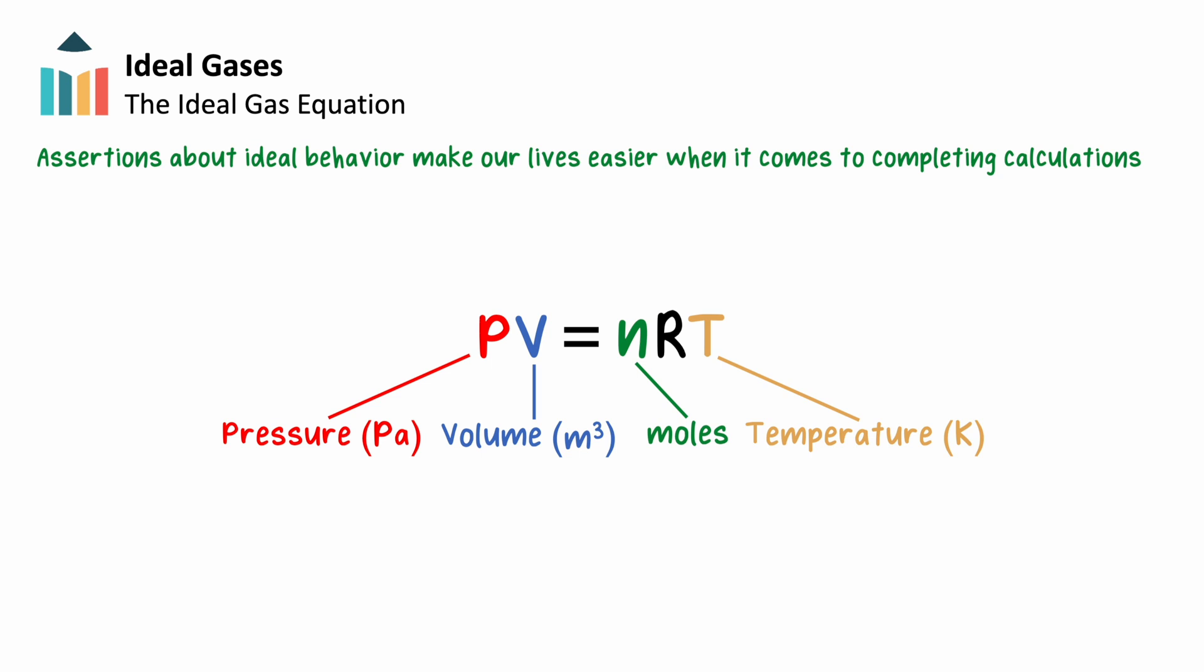R in this equation stands for the universal gas constant, equaling 8.314 joules per mole Kelvin. This constant makes our equation true and, as the name suggests, will not change.